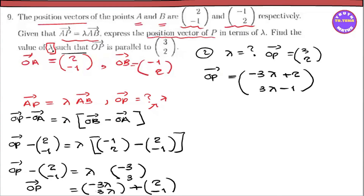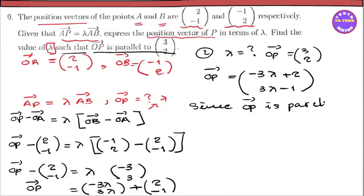Find the values of lambda such that OB vector is parallel. OB vector is parallel to (2, 3). And (3, 2): x times 3, y times 2, x times 3.